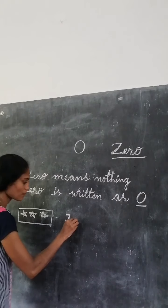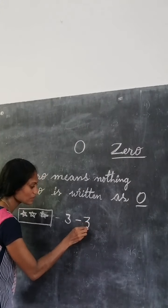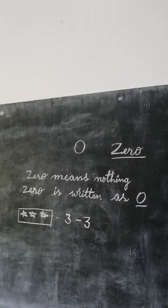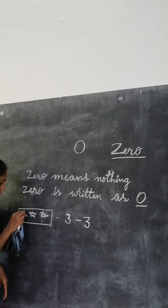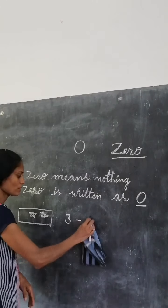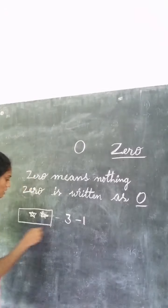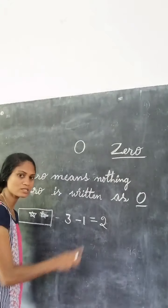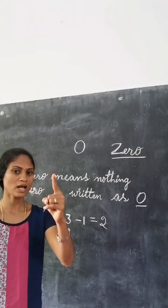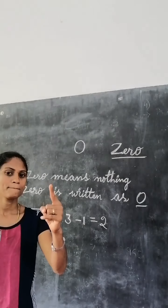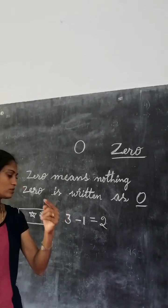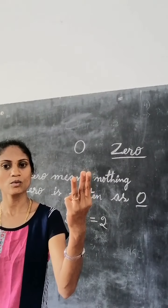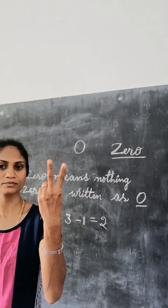Now I will minus 3 stars from this 3 stars. I will minus 1 star — how many remain? 3 minus 1, how many remain? 2.